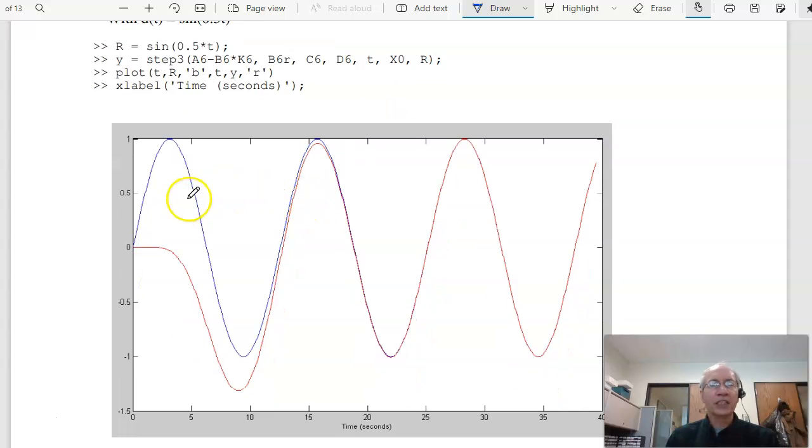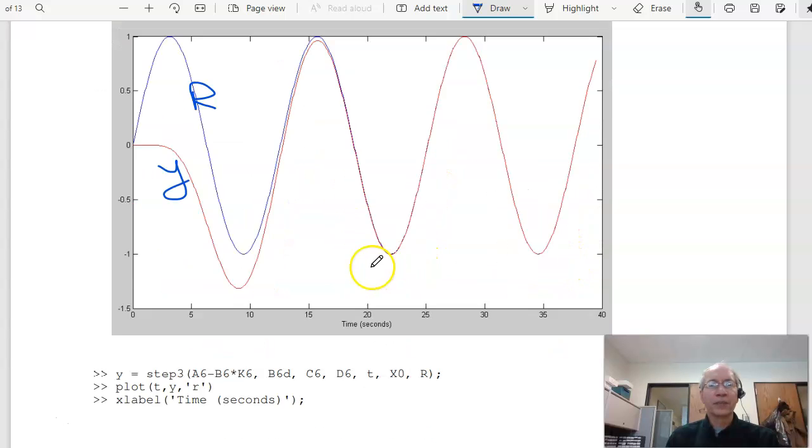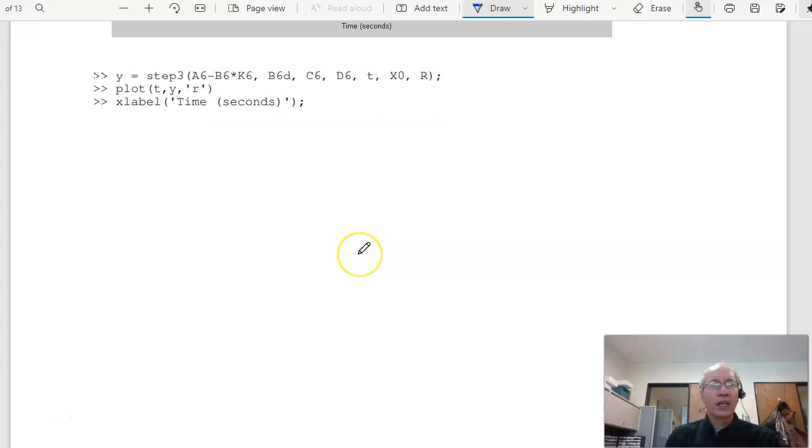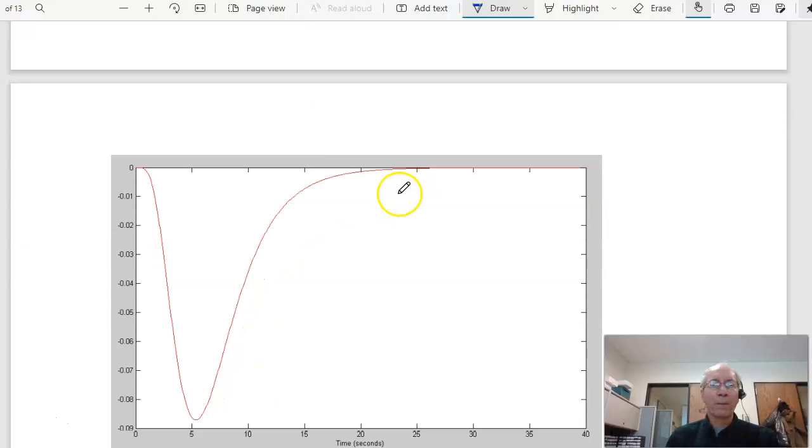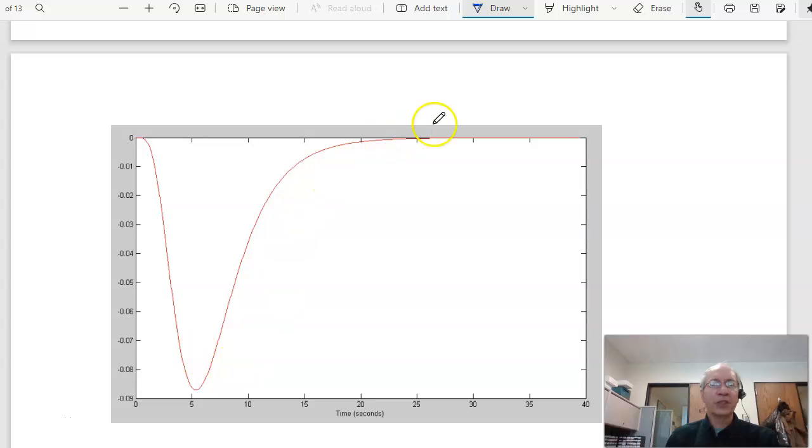If I want to see what happens if I have a disturbance at 0.5 radians per second, change the B matrix, this is still a sine wave, and what you get is the output ignores the disturbance.